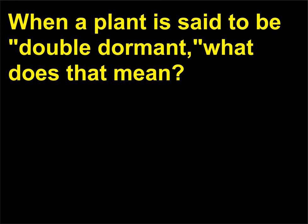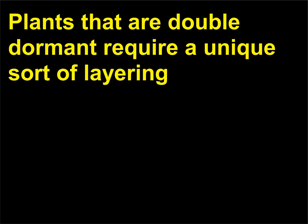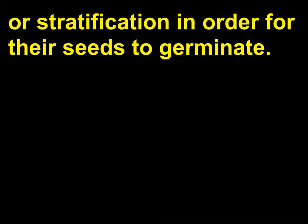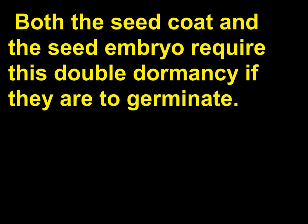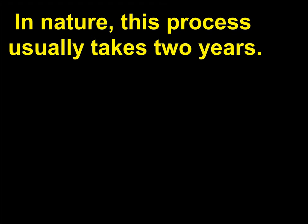When a plant is said to be double dormant, what does that mean? Plants that are double dormant require a unique sort of layering or stratification in order for their seeds to germinate. The seeds of these plants must have a period of warmth and moisture followed by a cold spell. Both the seed coat and the seed embryo require this double dormancy if they are to germinate. In nature, this process usually takes two years.